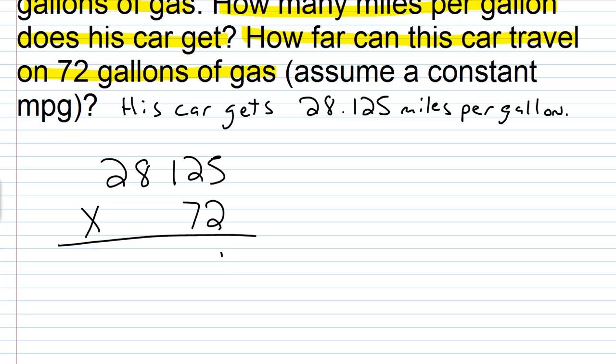2 times 5 is 10. 2 times 2 is 4, plus 1 is 5. 2 times 1 is 2. 2 times 8 is 16. 2 times 2 is 4, plus 1 is 5. Let's go ahead and erase, and now we'll move on to here.